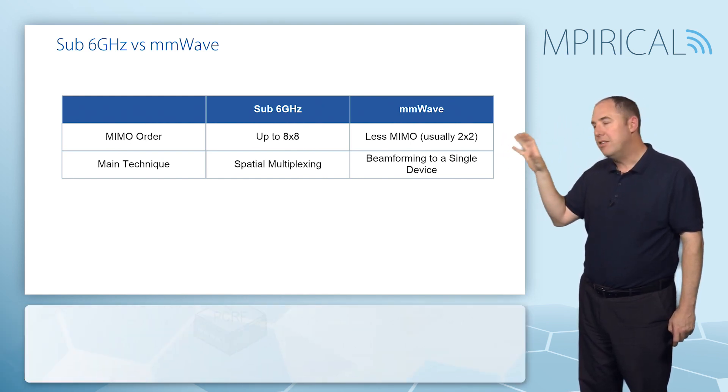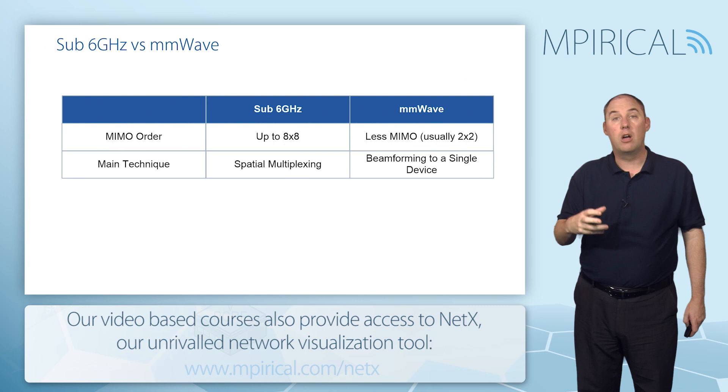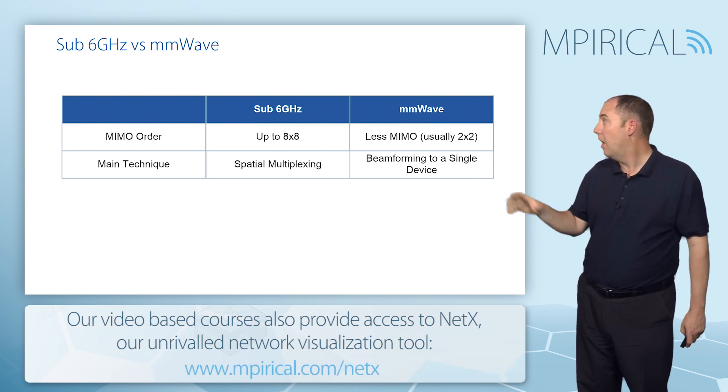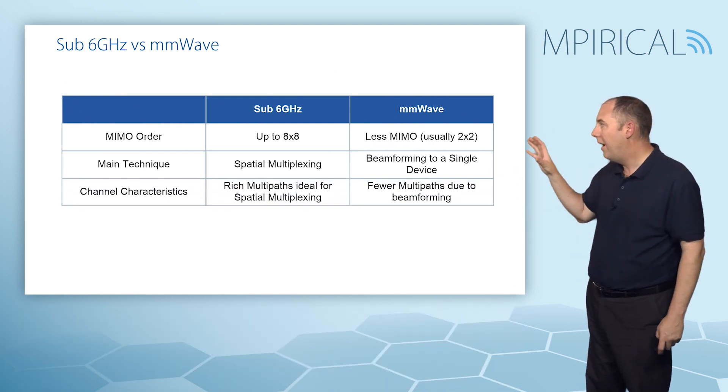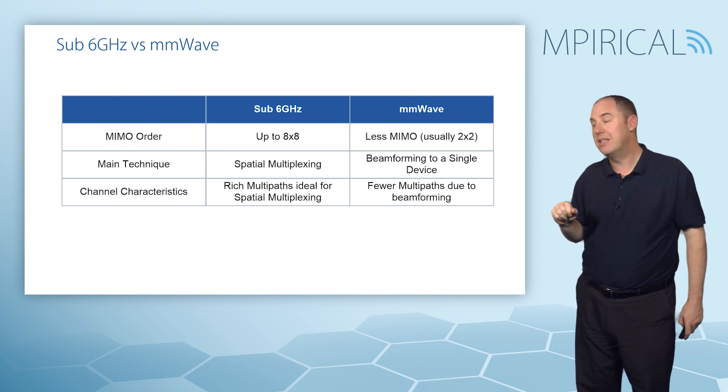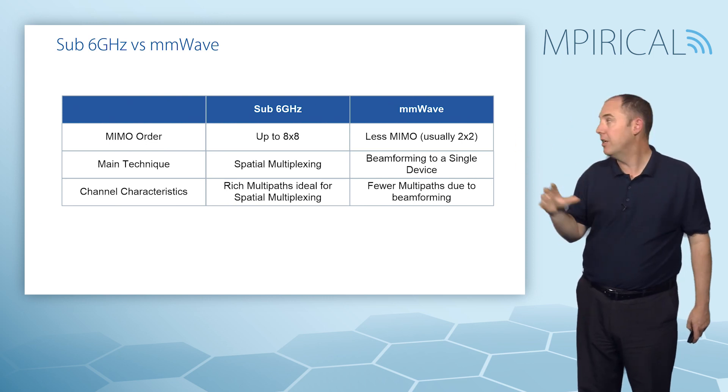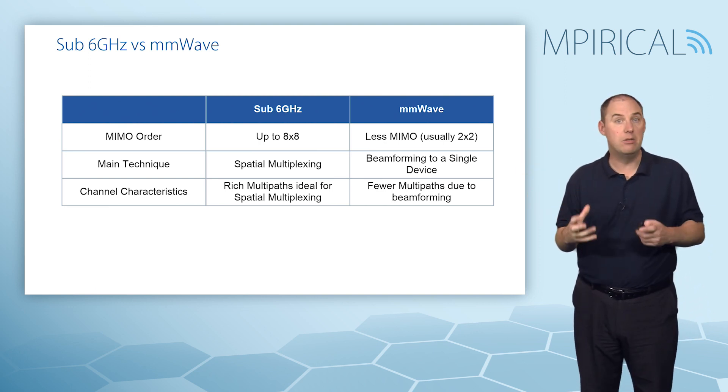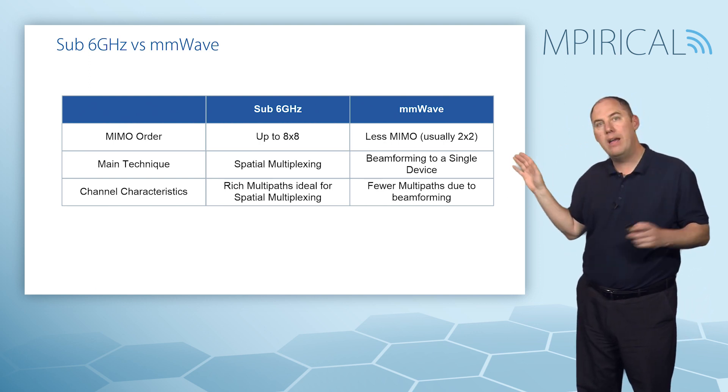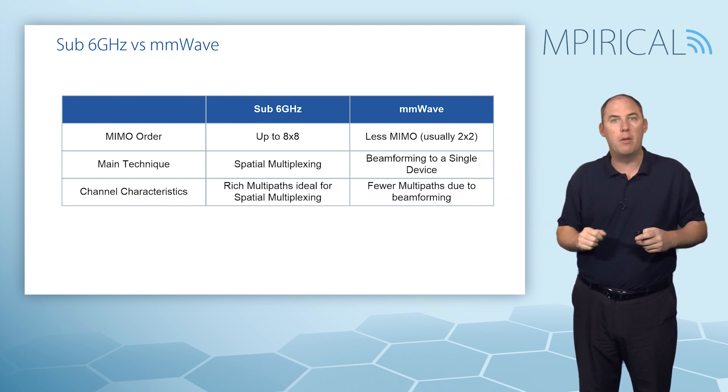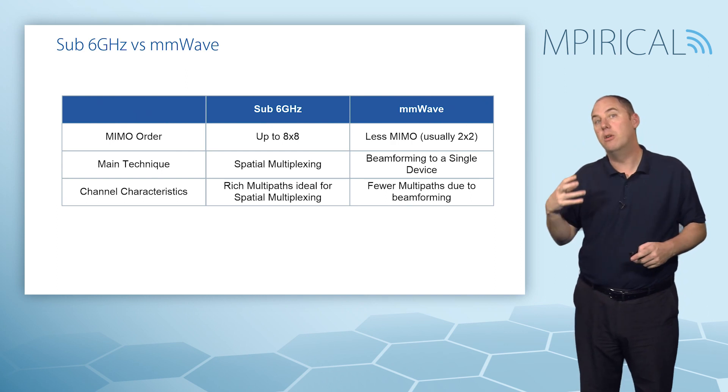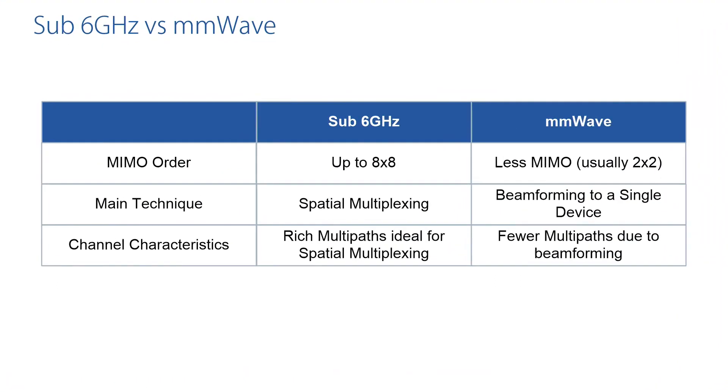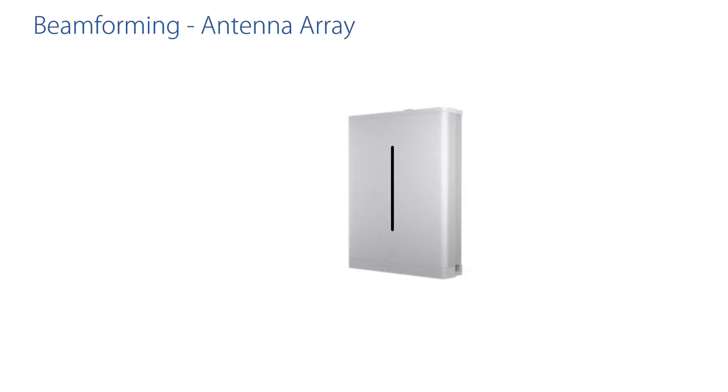As such, the main techniques below 6 gigahertz use more spatial multiplexing. Above 6 gigahertz into the millimeter waves, it's very much beamforming to a single device. Why? Well, it's back to the channel characteristics. Sub-6 gigahertz is very rich in multipaths, ideally suited for spatial multiplexing. Millimeter wave, because of that direction of the beam, we're reducing the amount of multipaths, and therefore it's ideally suited for pure beamforming with the potential of possibly a little bit of spatial multiplexing in there as well.